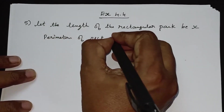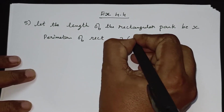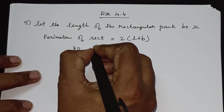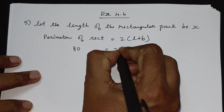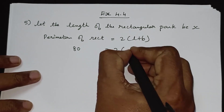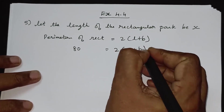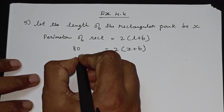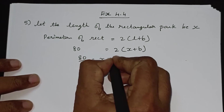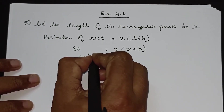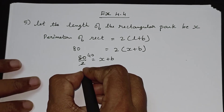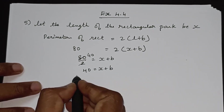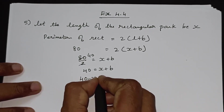The perimeter of a rectangle formula is 2 × (l + b). The perimeter is 80 meters, so 80 is equal to 2 × (l + x). Dividing by 2, we get 40 is equal to l + x, so l is equal to 40 − x.